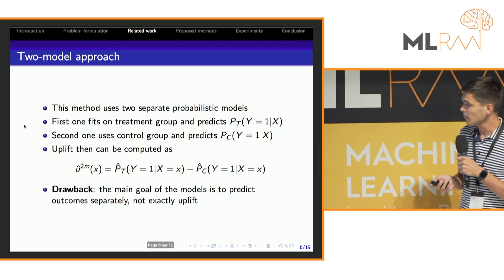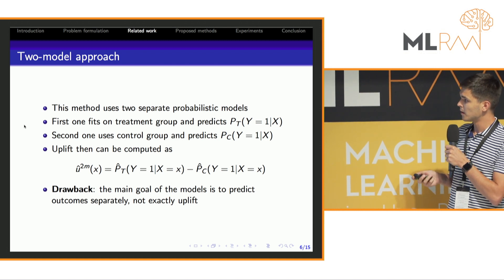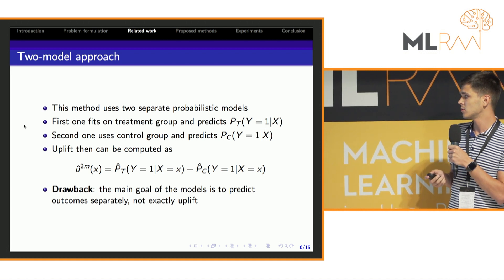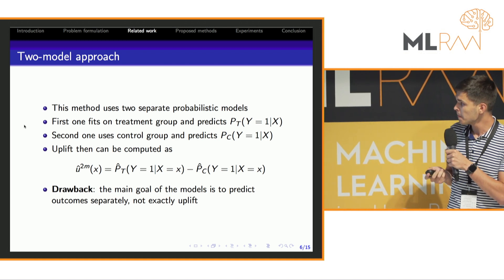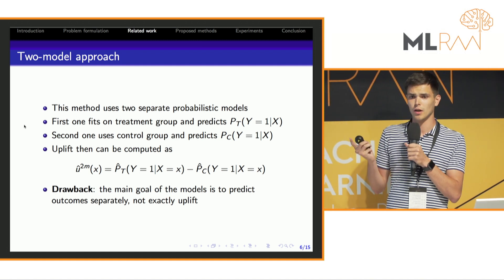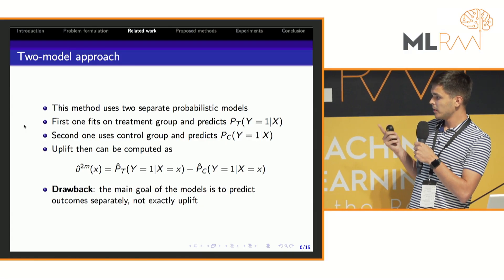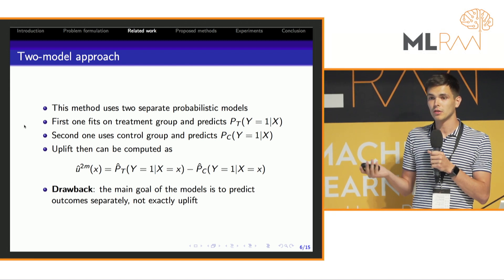Now about current methods of uplift prediction. First, the two model approach uses two separate probabilistic models. The first one can be trained on group T and the second one on C, and we can compute uplift as a difference of their predicted probabilities. But the main goal of the models here is to predict outcomes, but not exactly uplift.